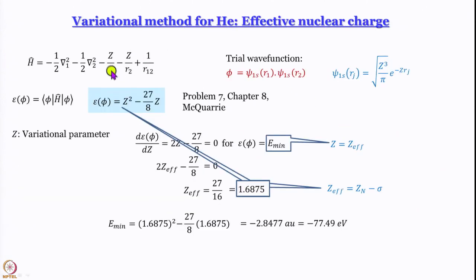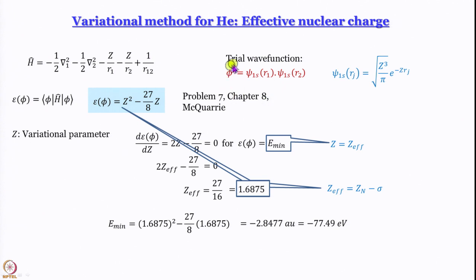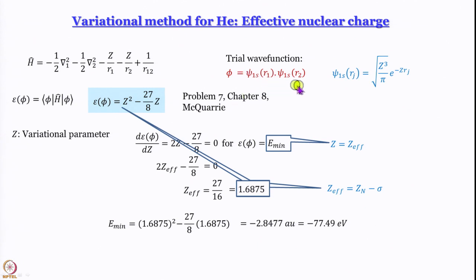So far, what we have been able to achieve is that by using a variational method for helium, we have been able to reach the effective nuclear charge. We had written down our Hamiltonian in atomic units, and the trial wave function we are using is very simple — it is the same kind of function we encountered during orbital approximation. Psi_1s is the same orbital you get from the hydrogen atom; the only difference is that one is written in terms of coordinates of electron 1 and the other in terms of coordinates of electron 2.